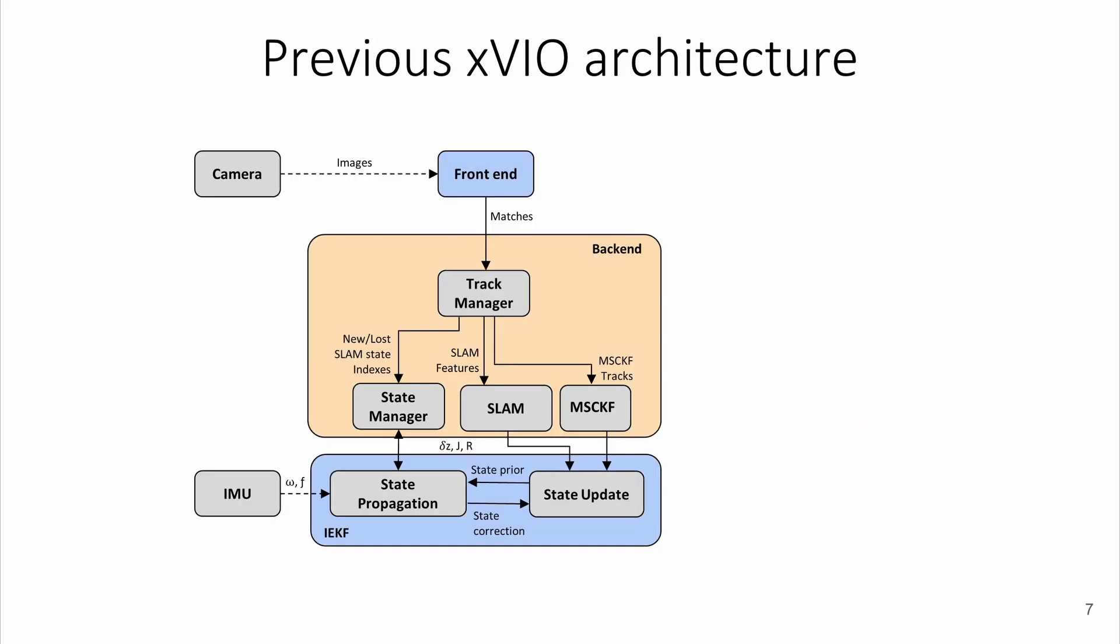The single agent XVAO architecture extracts fast corners and tracks them in the incoming image stream using the Lucas-Kanade tracker. Tracks are then processed as MSCKF or SLAM by the extended Kalman filter. Here with SLAM, we mean the landmarks kept in the filter state.